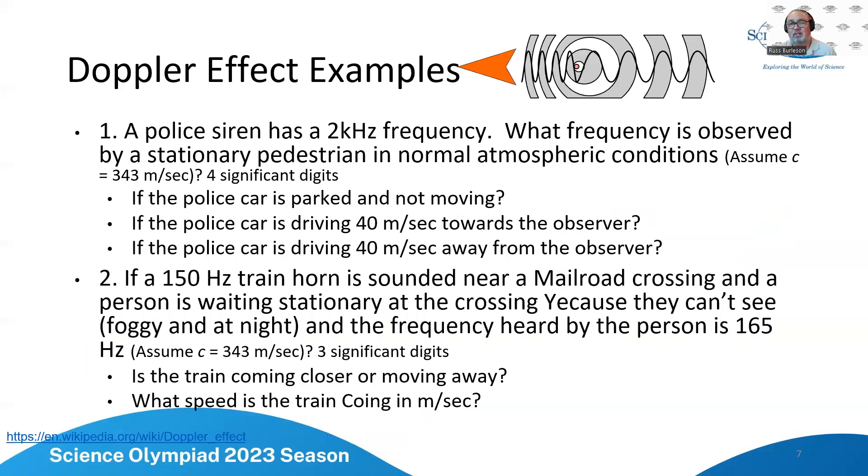So now let's talk about some of the Doppler effect examples. A police siren has a two kilohertz frequency. What frequency is observed by a stationary pedestrian in normal atmospheric conditions? Assume the speed of sound is 343 meters per second, four significant digits. And there's three different scenarios I want you to think about. I want you to think about if the police car is parked and not moving, if the police car is driving 40 meters per second towards the observer, and the police car is driving 40 meters per second away from the observer.